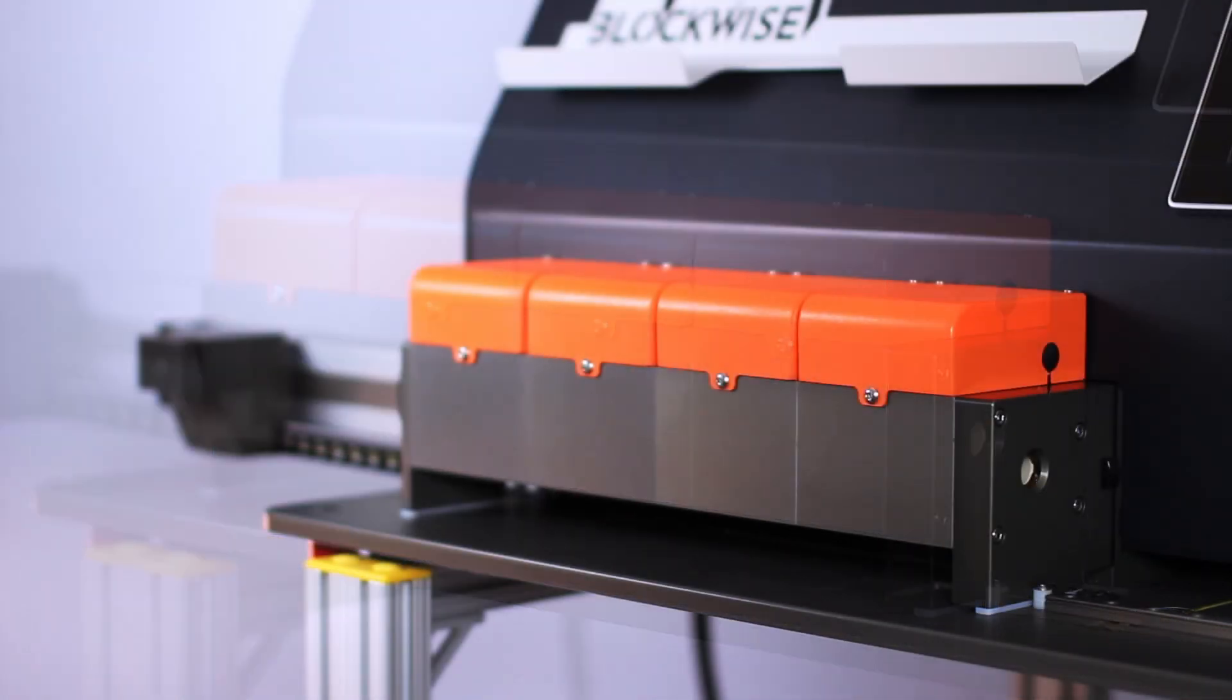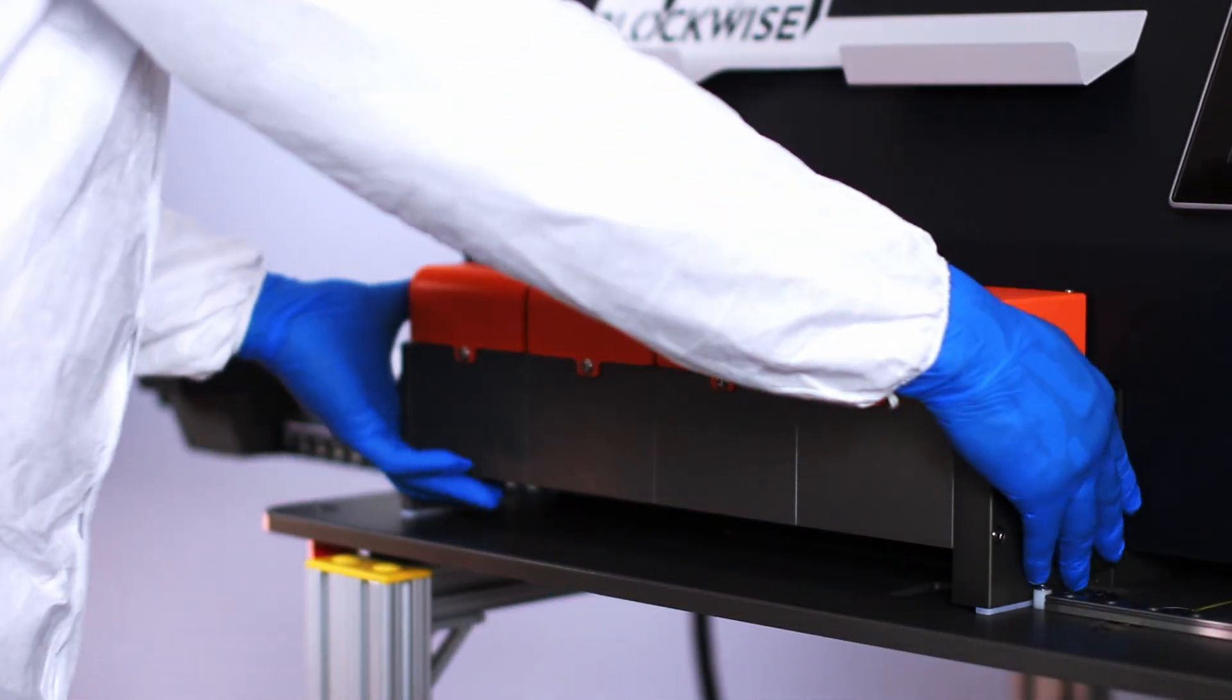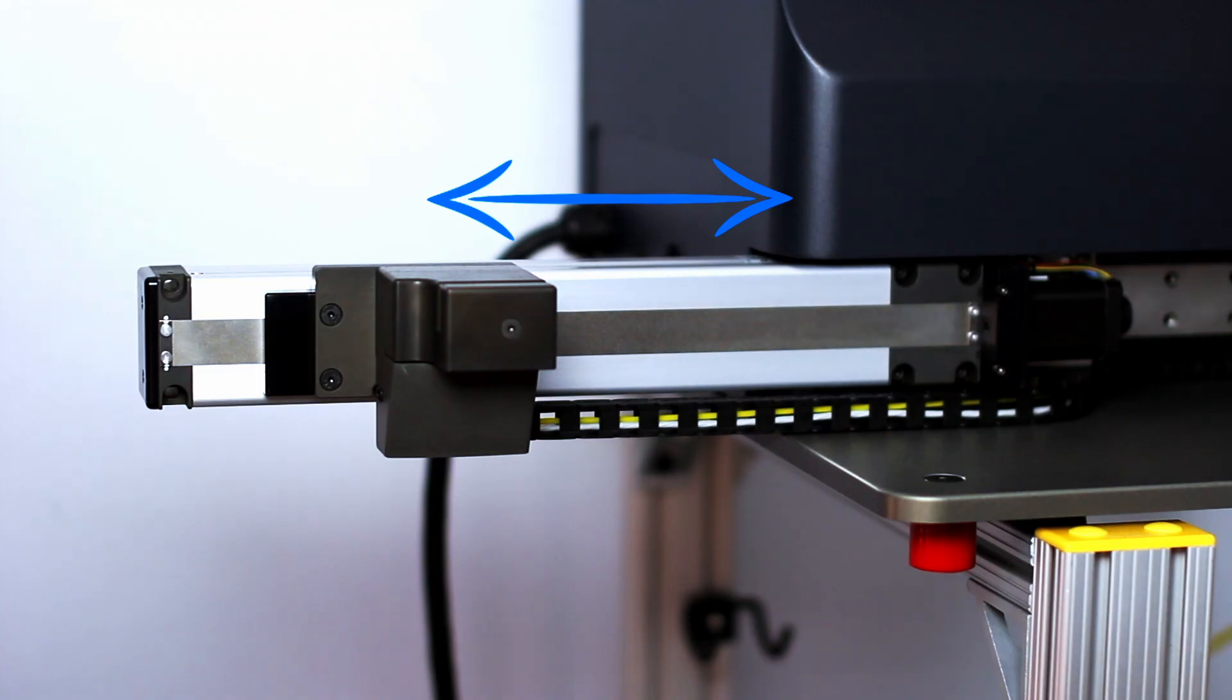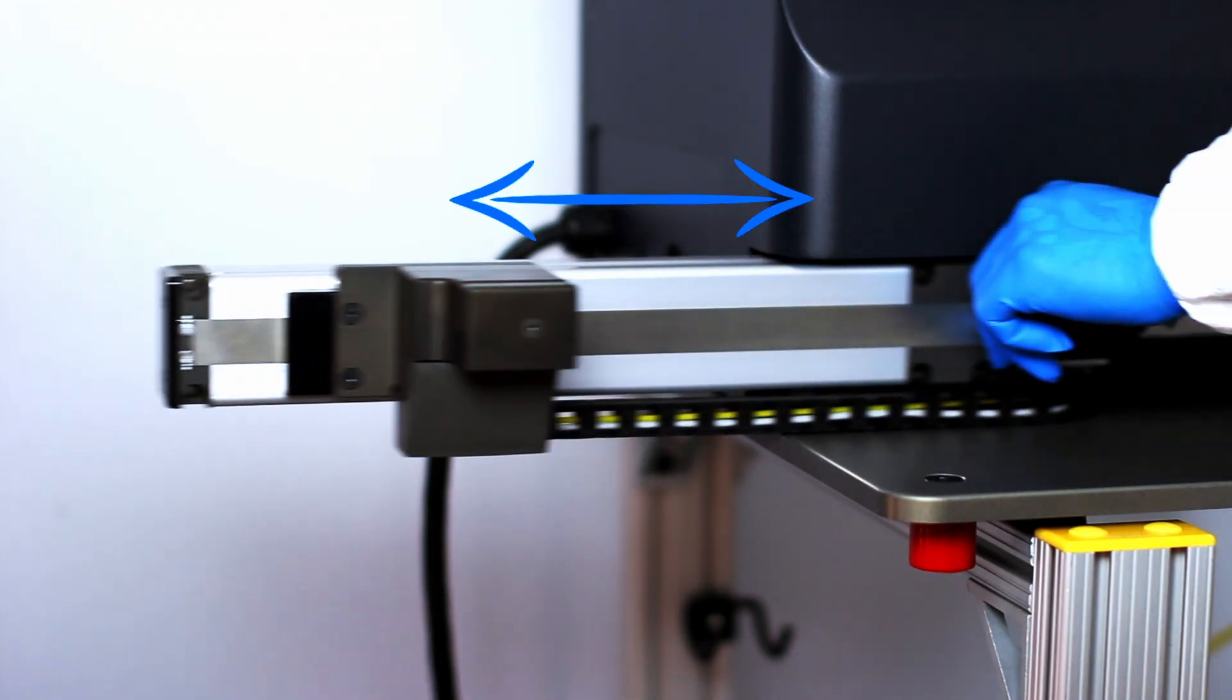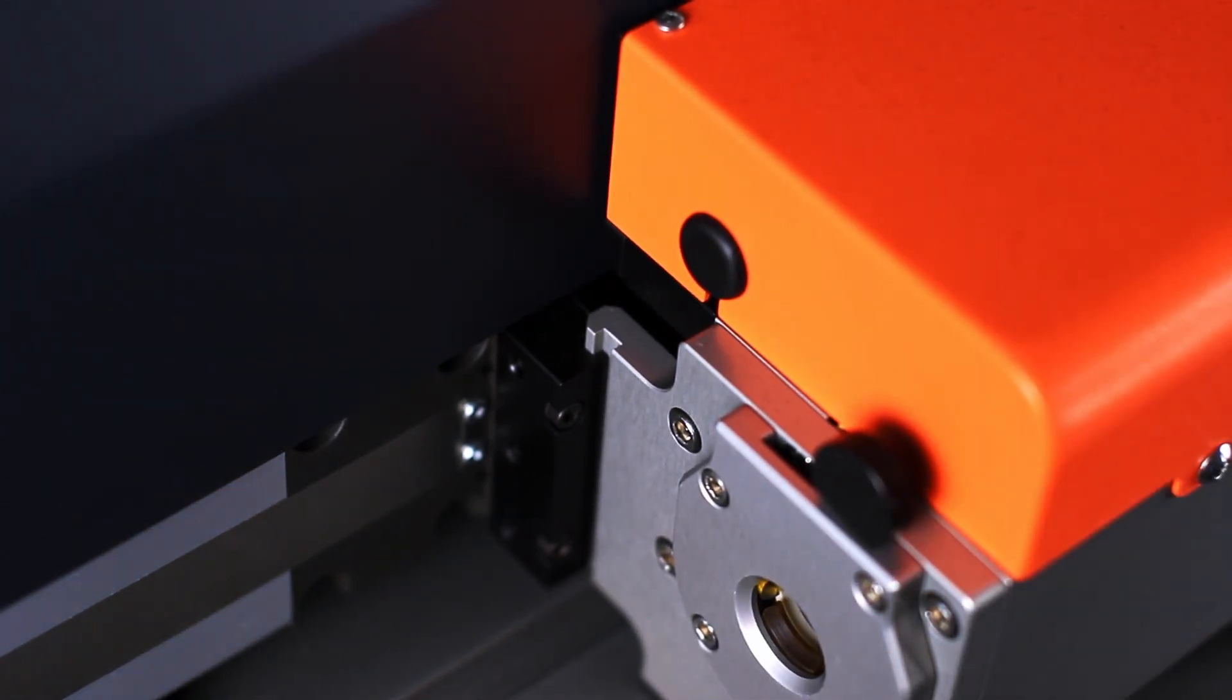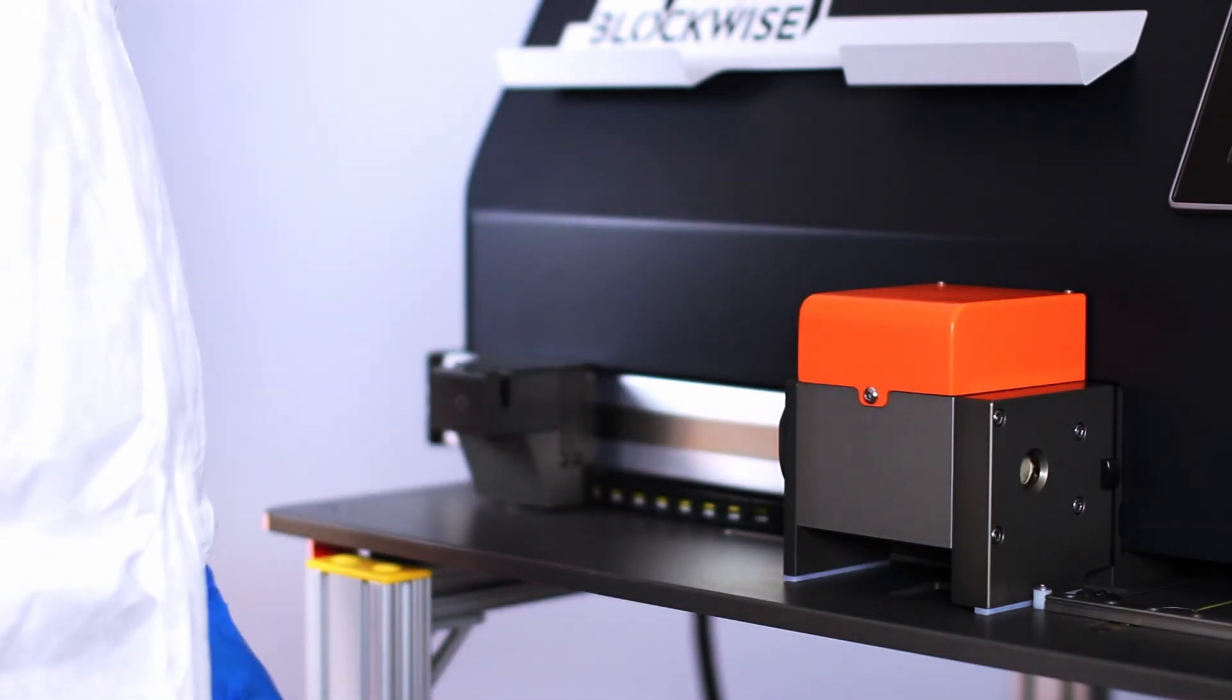With the machine powered off, push the module release button to disconnect the module from the machine base. To attach a different module, simply adjust the telescoping actuator, connect the module mounting hook to the mating hook on the machine, and push forward to click the module into place.